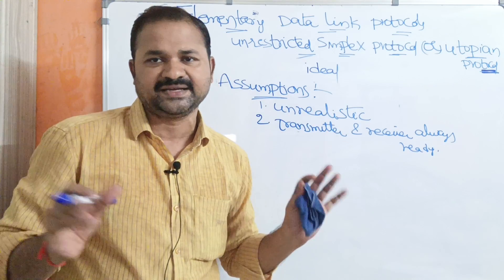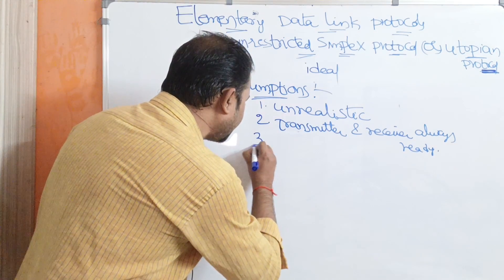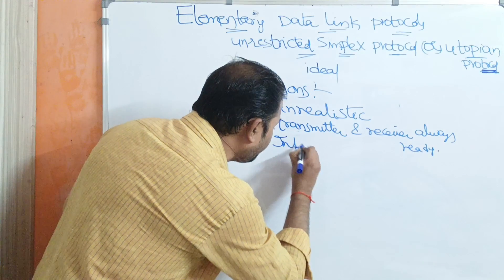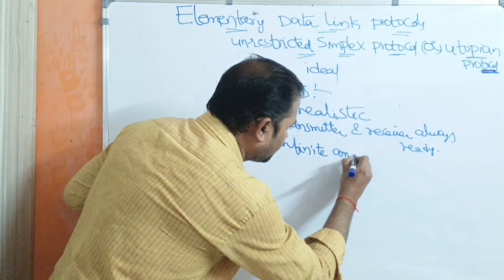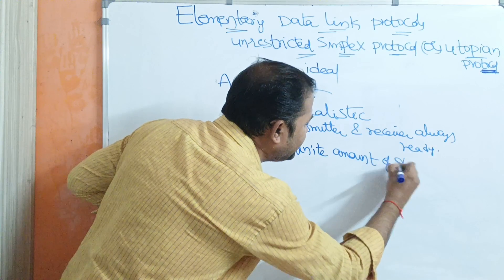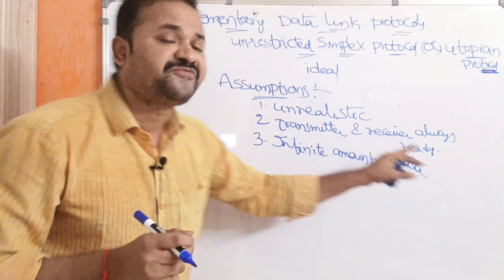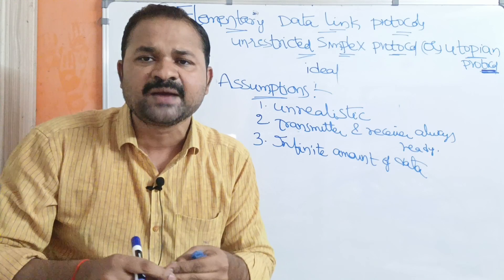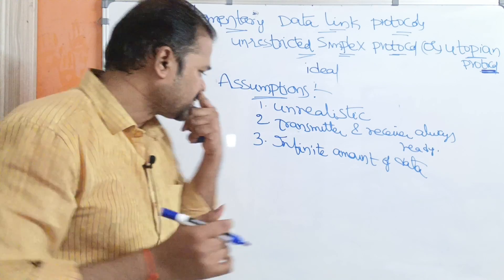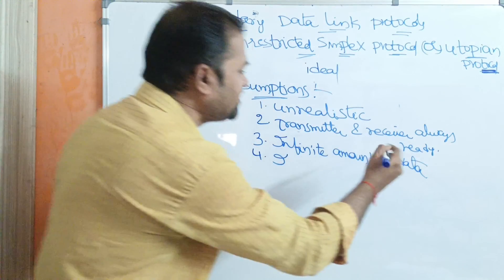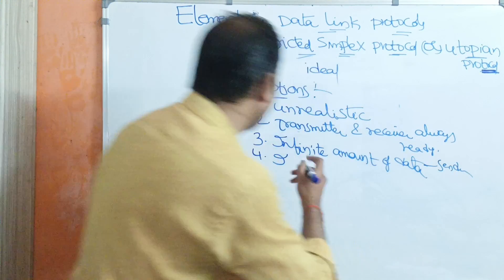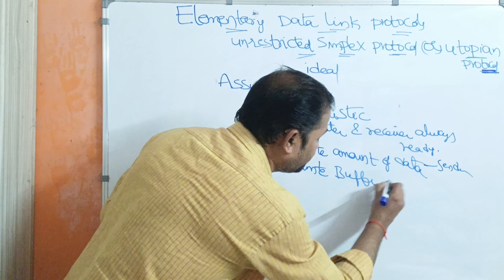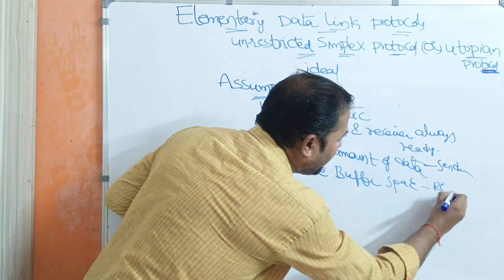The third assumption is that the sender has an infinite amount of data. So the sender is always ready with infinite data and can send any amount to the receiver at any time. The fourth assumption is that the receiver has infinite buffer space, meaning the receiver can accept any amount of data sent by the sender.